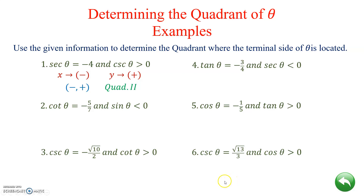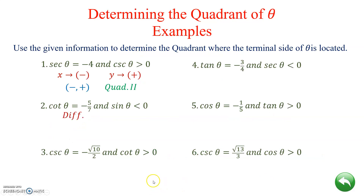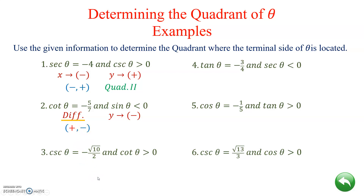Example 2: Cotangent of theta equals negative five-sevenths. Our resource says if cotangent is negative, the signs are different, so we note the signs are different but can't determine the quadrant yet. Next, sine of theta is less than zero — sine is associated with y — so y is negative. Now creating our ordered pair: y is negative, and the other coordinate must be different from negative, so it's positive. Positive/negative is quadrant 4.